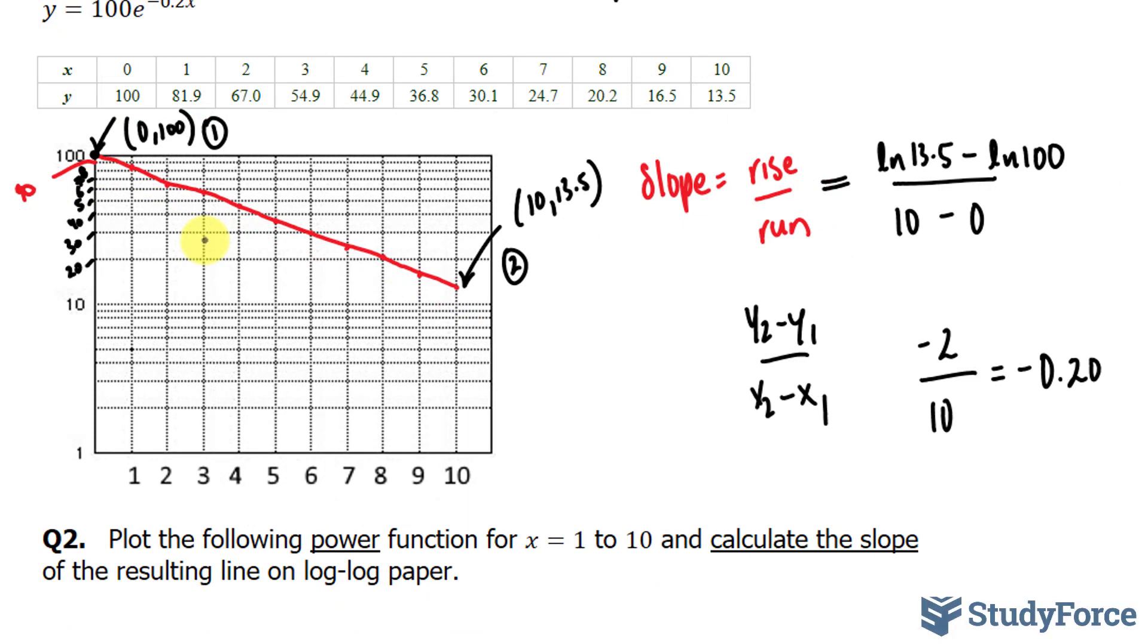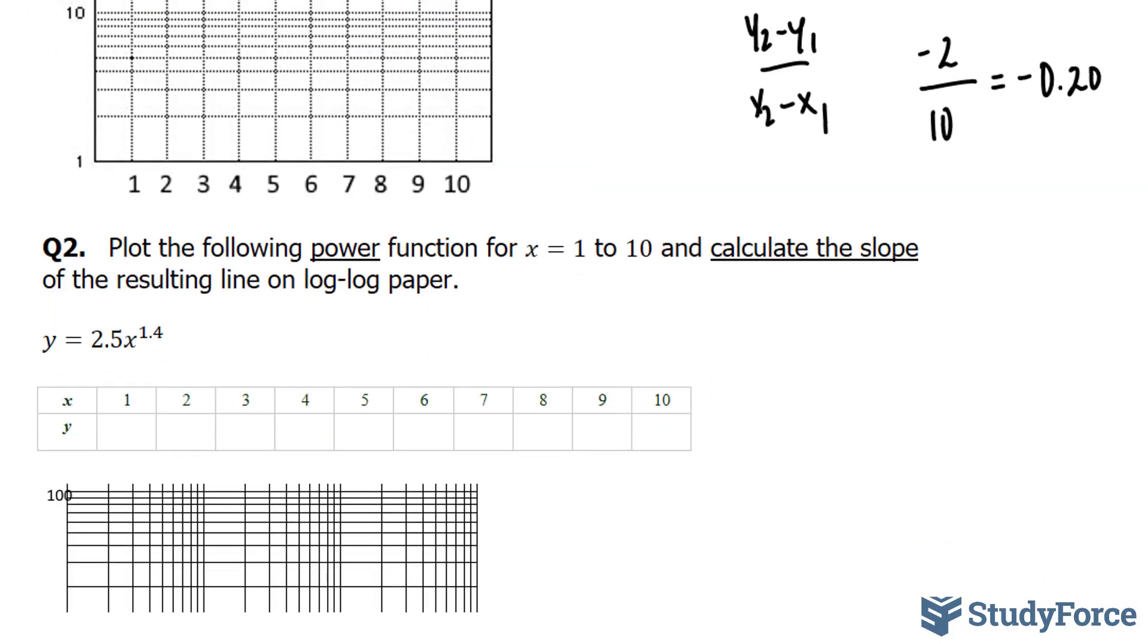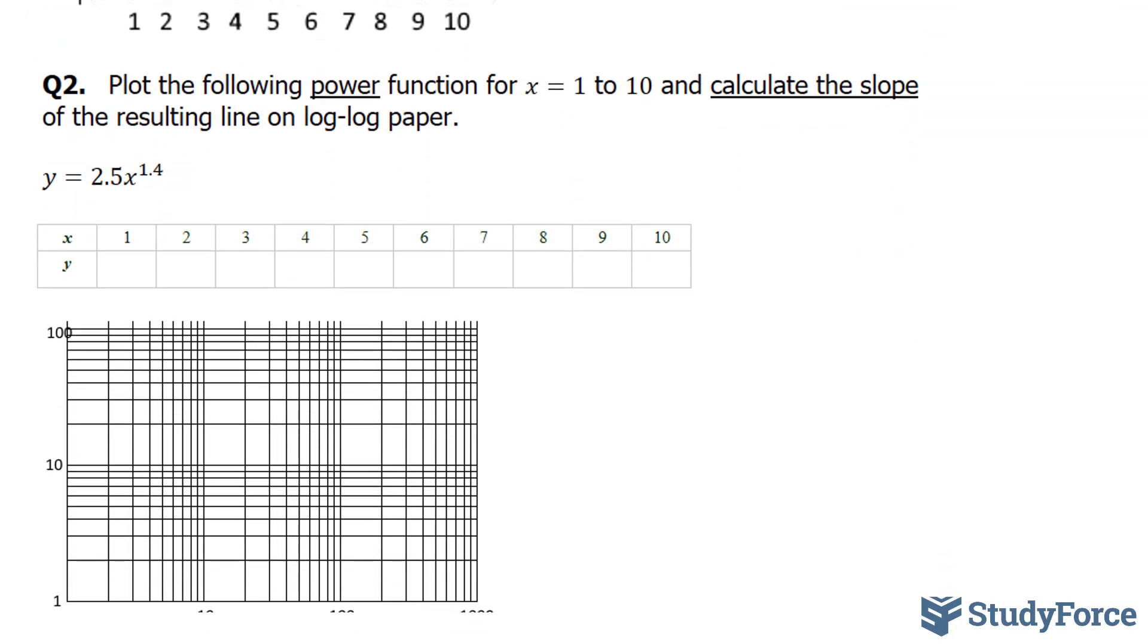Now that we've completed question 1, let's move on to question 2. In question 2, they ask us to plot the power function of x equals 1 to 10 and calculate the slope of the resulting line on log-log paper this time. So this time, both of the axes will be on a logarithmic scale. The function that we are working with is y equals 2.5x to the power of 1.4.